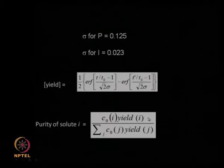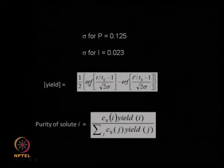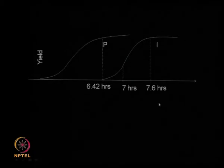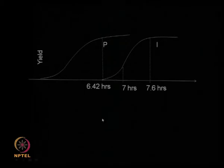The purity in a two-component system is the concentration maximum times yield for component 1, divided by the sum of concentration times yield for component 1 plus component 2. If you collect more of the protein by extending the collection time, you also bring in some impurity, so purity goes down. There is a trade-off: collecting up to the peak gives pure protein, but collecting further introduces impurity and reduces purity.